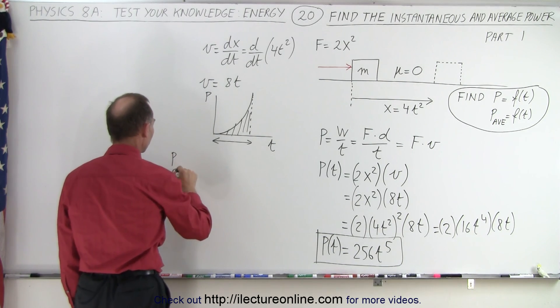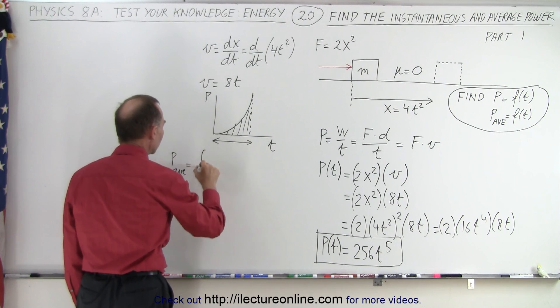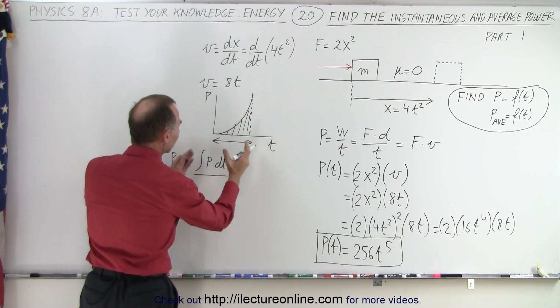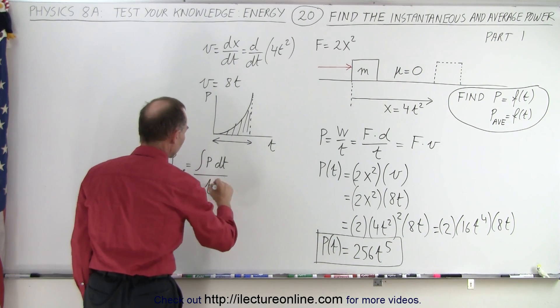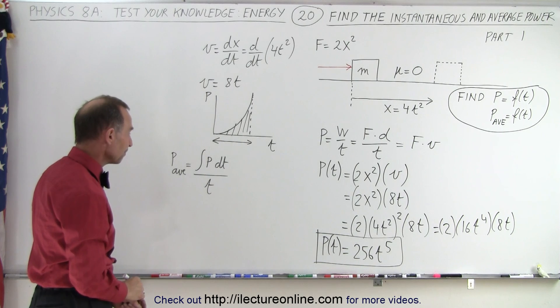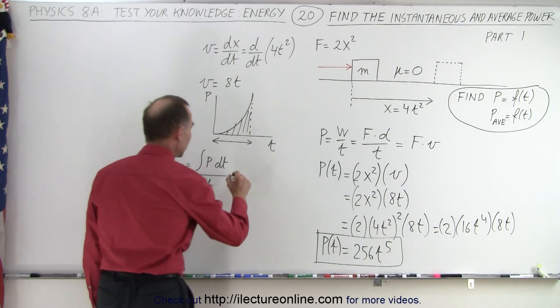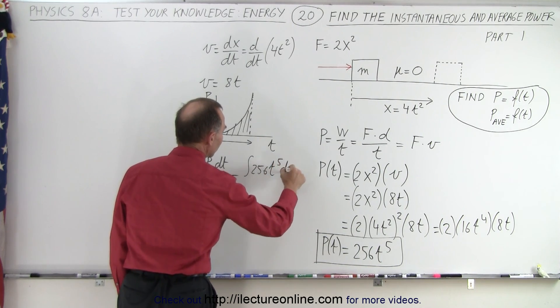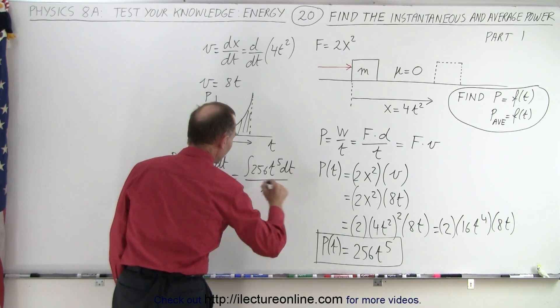In other words, P average is equal to the integral of the instantaneous power times dt divided by the time period. And in general, that would be equal to t. So this would be in terms of any value of t. So if we do that, that would be equal to the integral of 256t to the fifth power dt, all divided by time.